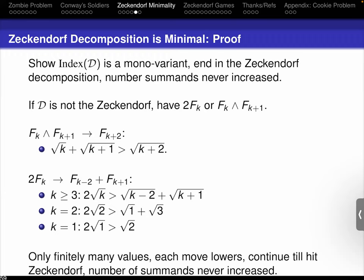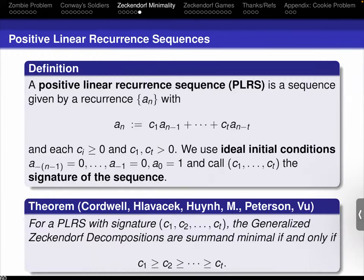This is a really nice application of monovariants. One advantage of smart students is they can generalize things. Instead of the standard Fibonacci numbers where each is the sum of the previous two, they looked at a more general linear recurrence. They were able to show it is summand-minimal if and only if the coefficients C_i are non-negative integers that are monotonically non-increasing — C1 is the largest, C2 second largest, and so on, with ties allowed. If that is the case, it is summand-minimal; if not, it is not. They proved both directions.